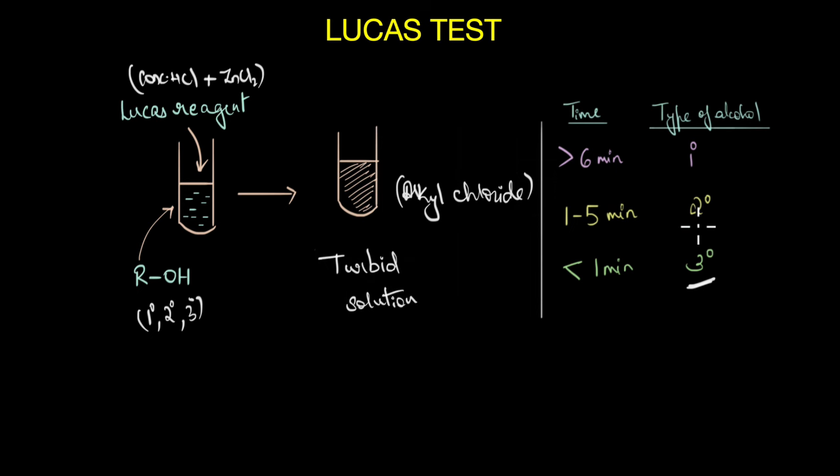Now in the case of secondary alcohols, the time taken for the reaction or the turbid solution to form is usually about 1 to 5 minutes because secondary carbocations are less stable than the tertiary carbocations.